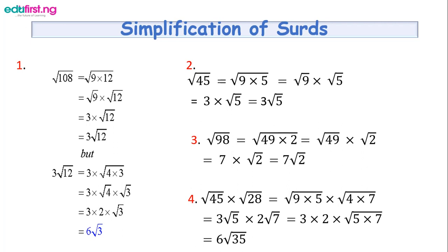Root 9 is 3, so we have 3 root 12. Now root 12 can also be broken down as 4 times 3. Giving each one its own root: root 4 multiplied by root 3. Root 4 is 2, leaving root 3. So 3 times 2 gives us 6 root 3. We are done with the first example.